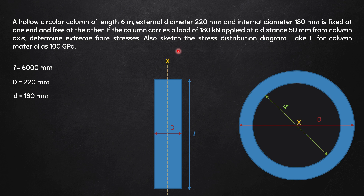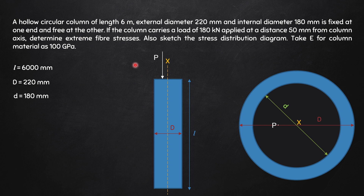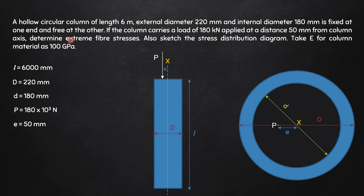This is the column axis. The load is at a distance of 50 mm from the column axis. Now 50 mm could either be to the right or to the left — it does not matter. If it is not specified in the problem, you can take it either way; only the stress distribution diagram will change, the values will come out the same. Here I have taken it to the left. P is 180 kN, written as 180×10³ N, and it is at an eccentricity e of 50 mm.